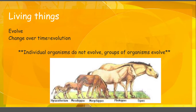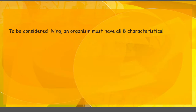Let's recap. All living things are made of cells, all living things reproduce, all living things require material and energy so they have to get food and do respiration, all living things respond to the environment, contain a universal genetic code and DNA, grow and develop, maintain homeostasis, and groups of living things will evolve over time. You have to have all eight of those things in order to be considered living.